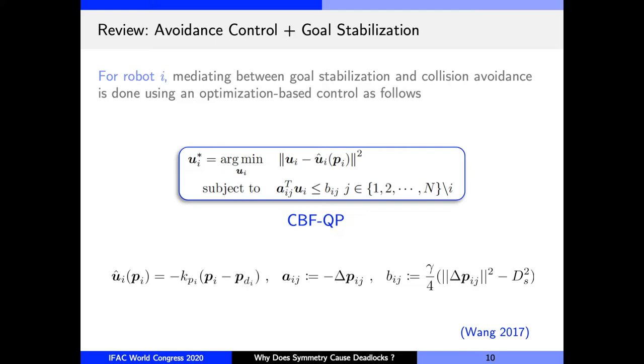Let's see now what information we can derive about this optimal control u_i^star to see why this control is a bad choice under symmetric circumstances. In other words, it is this control which will cause deadlocks. Let's see how and why.